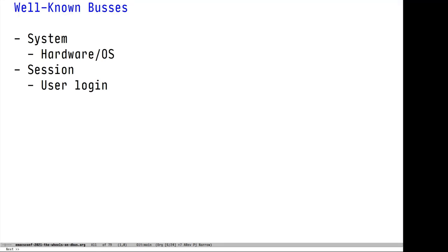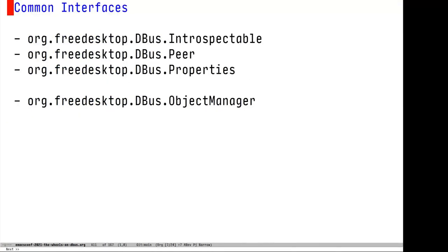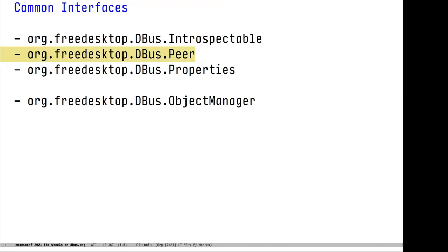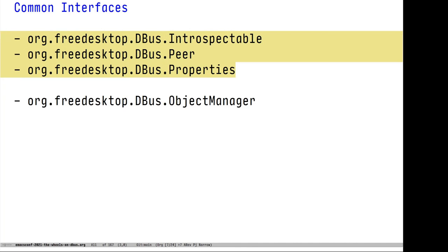There are two well-known buses, which roughly map to those two use cases. The system bus is for interfacing with hardware and operating system level concerns like disks, networks, and so forth. The session bus is tied to a user login and is more in the desktop automation use case. There are some common interfaces you'll find when exploring D-Bus. The introspectable interface is the basis of reflection features — it has a single method called introspect that returns the XML interface description. Peer is used for lower-level connectivity, for example pinging a service to see if it's running. The properties interface is the basis of read-write properties, which are secretly method calls under the cover.